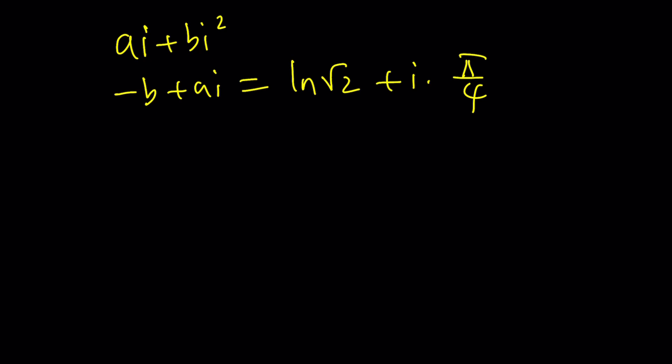So from here, can I find the value of a and b? Absolutely. Look at this. This is the real part, that's the real part, right? So b is equal to negative ln root 2. What about a? A is the imaginary part, the coefficient of i. There you go.